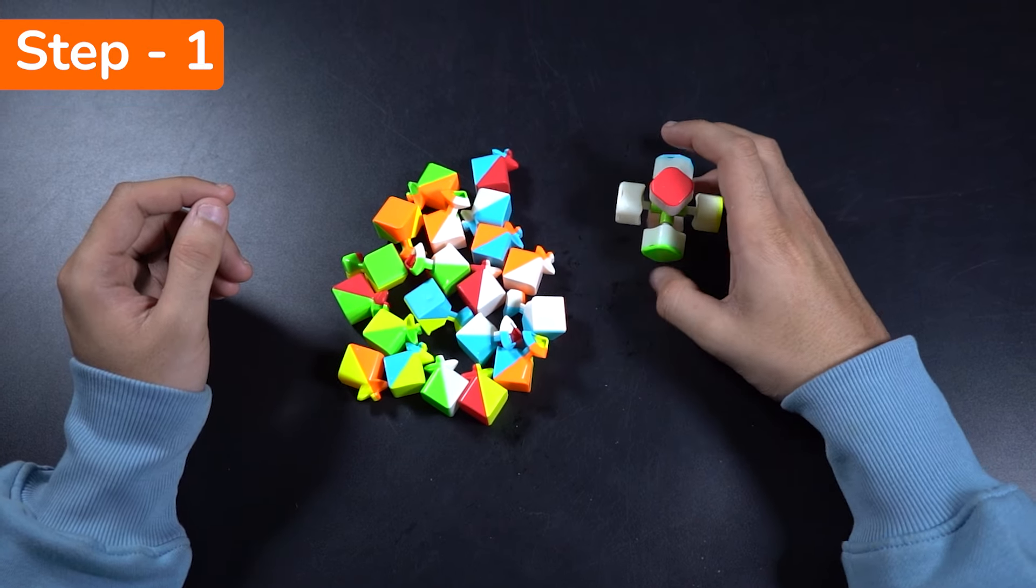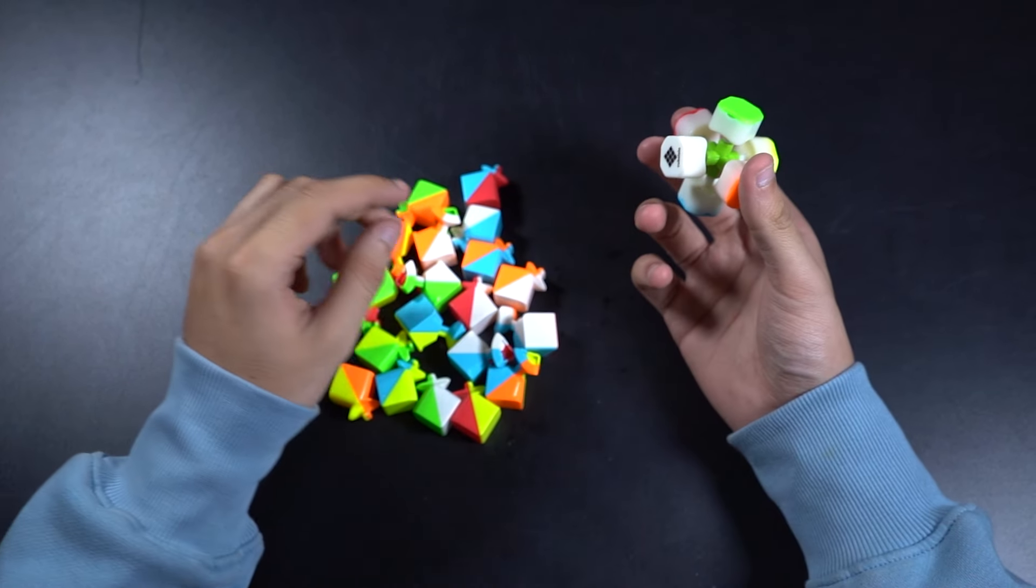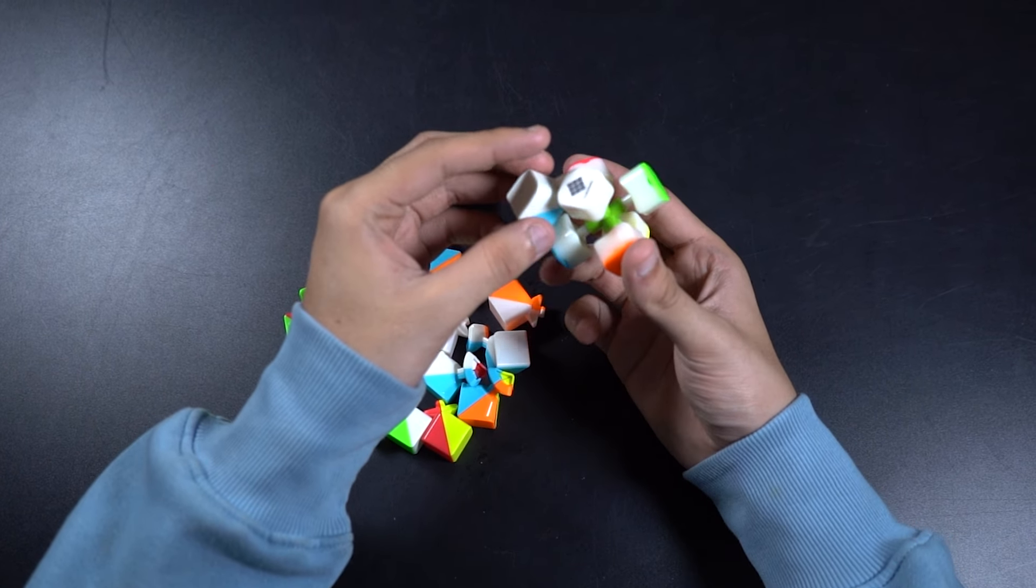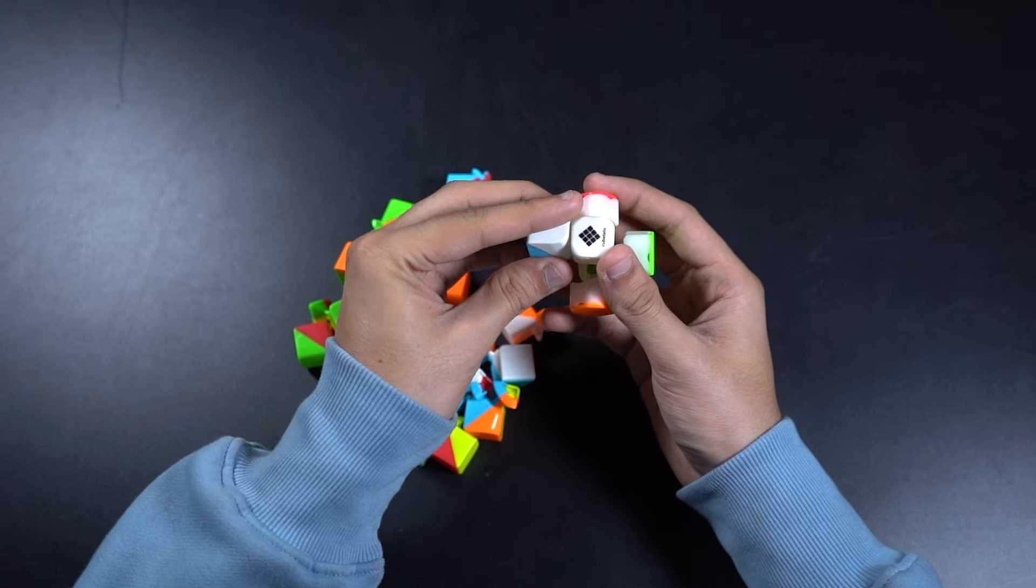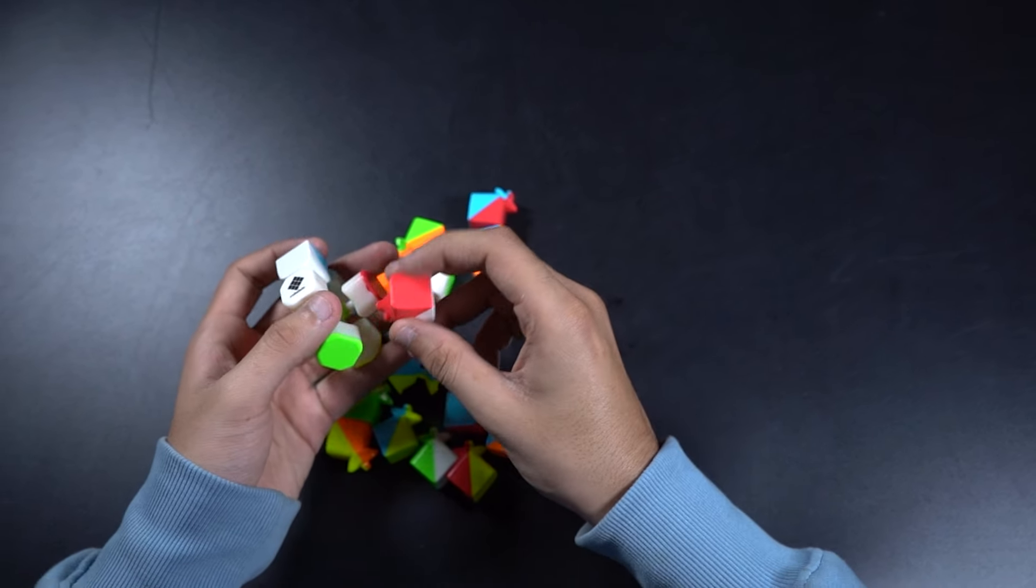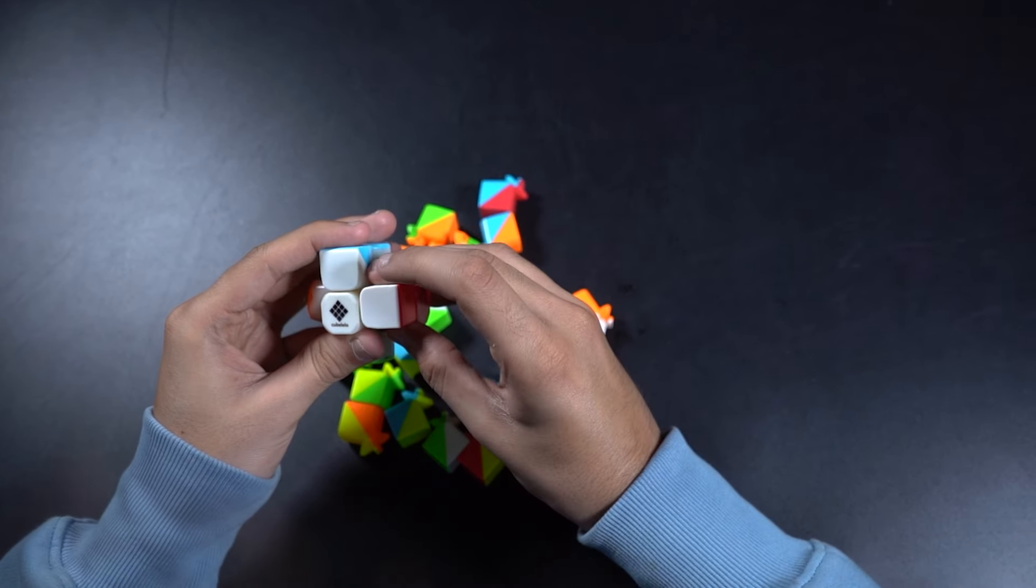So for the first step we are going to make a cross on any face of the cube. We're going to choose white because simplicity. So here we put in one piece. This is pretty intuitive. One piece over here. The next piece we take this red and white one and put it next to the blue one like so.